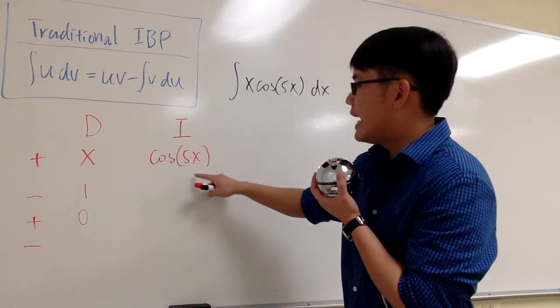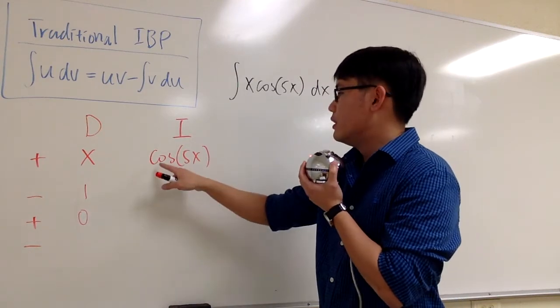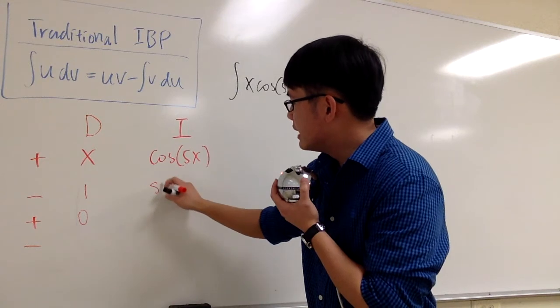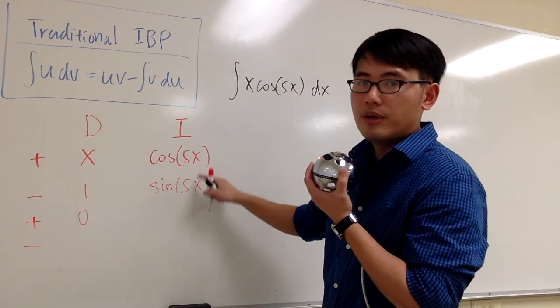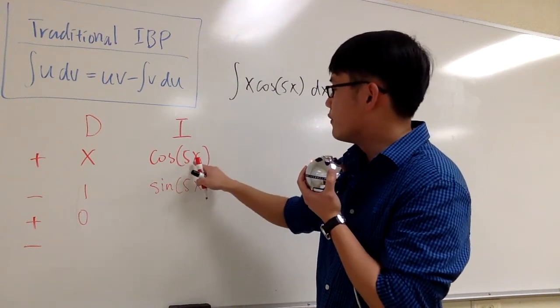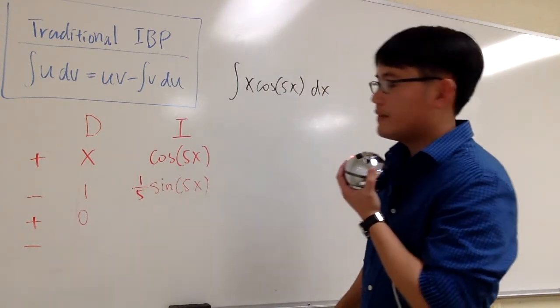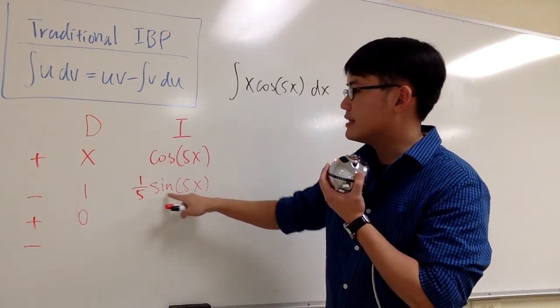And now let's work out the I for cosine 5x. What's the integral of cosine 5x? We are going to get sine 5x, but then inside we have a number. We have to divide by the derivative of 5x, which is 5. So we have to multiply by 1 over 5. And remember, the antiderivative of cosine is positive sine.